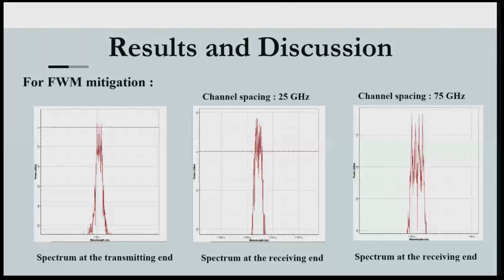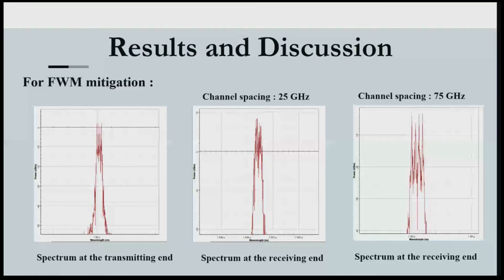For four-wave mixing mitigation, the performance of the proposed simulation setup was studied by varying the launch power from 5 milliwatts to 20 milliwatts and the bit rate from 10 Gbps to 40 Gbps, over 80 to 400 kilometers of transmission. All these parameters were studied for 4, 8, 16, and 32 channels, and results were compared for two channel spacings: 25 GHz and 75 GHz.